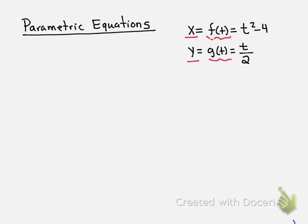So let's look at an example where we have x = t² - 4 will be the x position at any time, and the y position will be y = t/2.